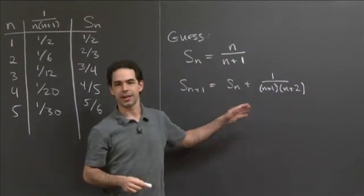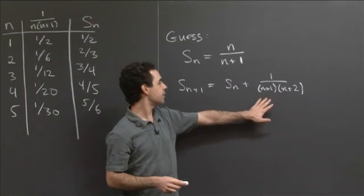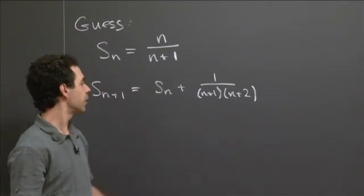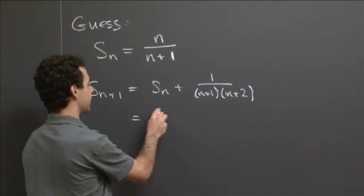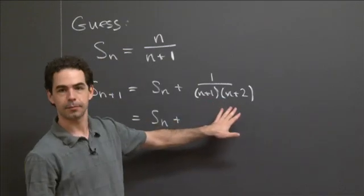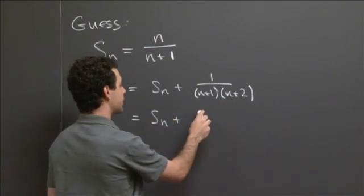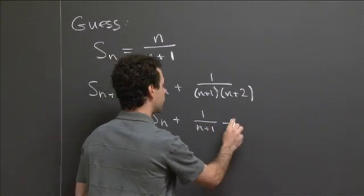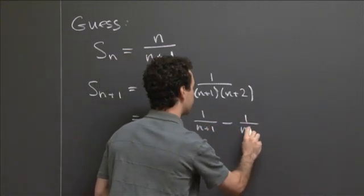So that's not maybe obvious what to do with this, but you could split this up. Really, you can split it up by partial fractions. And you can write this as, say, Sn plus. So if you split this up by partial fractions, what you'll get is that it's exactly equal to 1 over n plus 1 minus 1 over n plus 2.